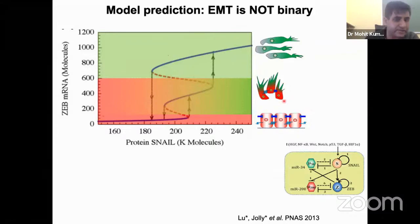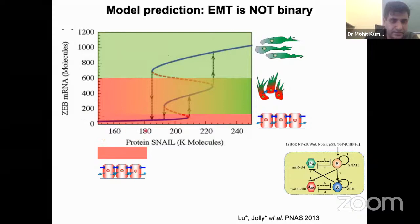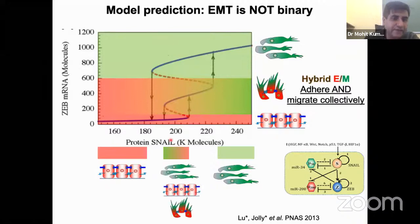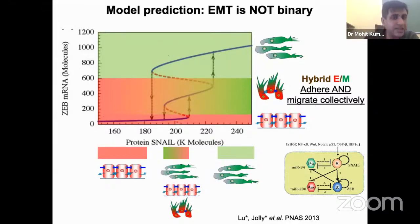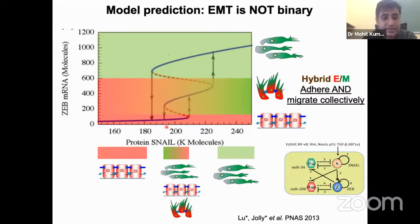Looking at the graph vertically: if snail levels are low, you get only one state — epithelial. If snail levels are high, you get only one option — mesenchymal. But in between, you can have multiple options: at the same signal level, the cell has three choices. It's a probabilistic process, just like a coin flip — you can say there's a 50% chance of heads but can't predict the outcome. So our model predicted: first, EMT is not binary — there can be a third hybrid state. Second, cells with the same genetic background can still have multiple phenotypes.